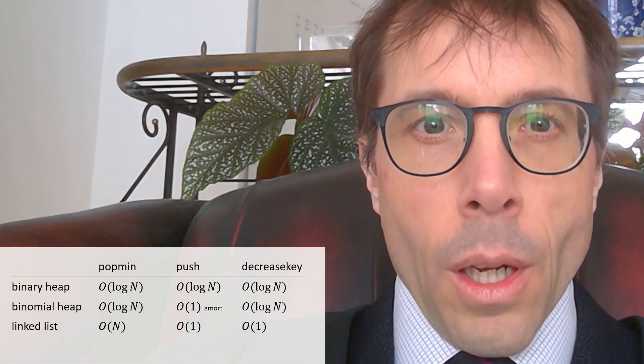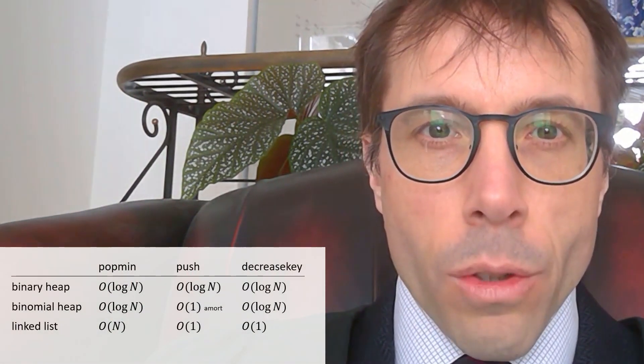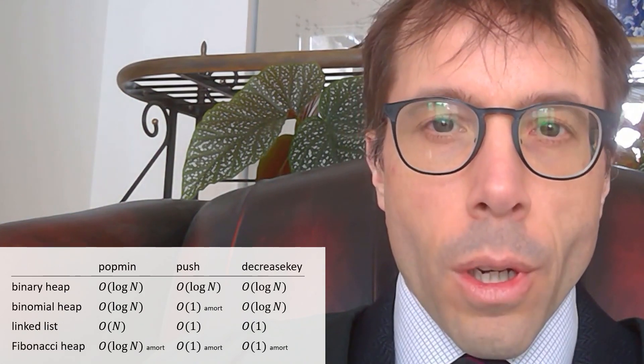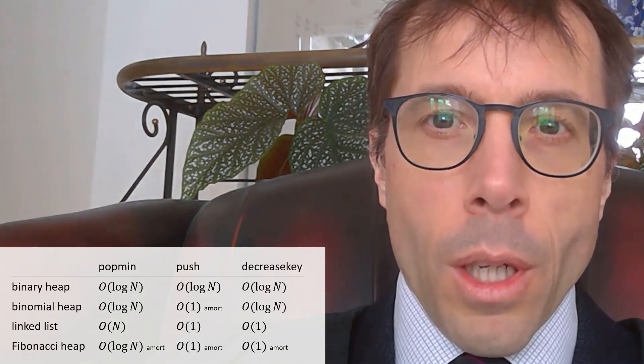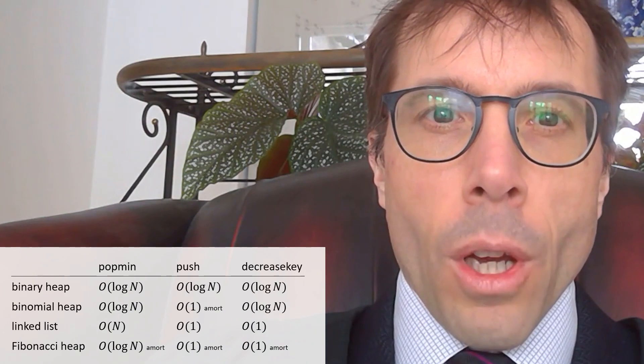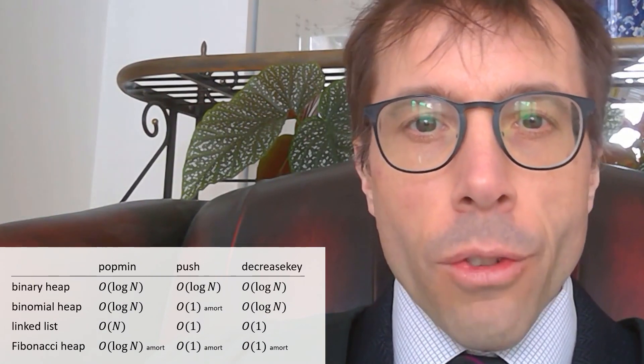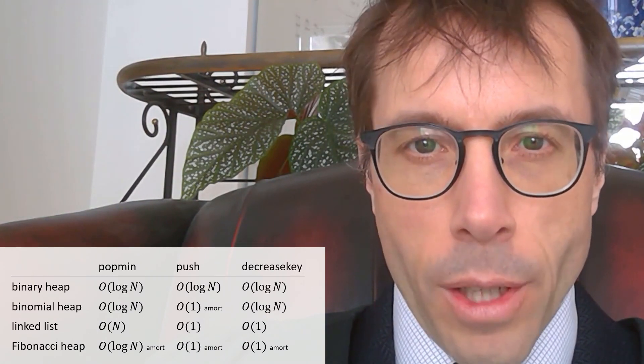Okay, so here's a summary of our three implementations. In the next video, we're going to look at a fourth implementation, the Fibonacci heap, which gets the best performance on each of these operations using an extremely clever amortized design.